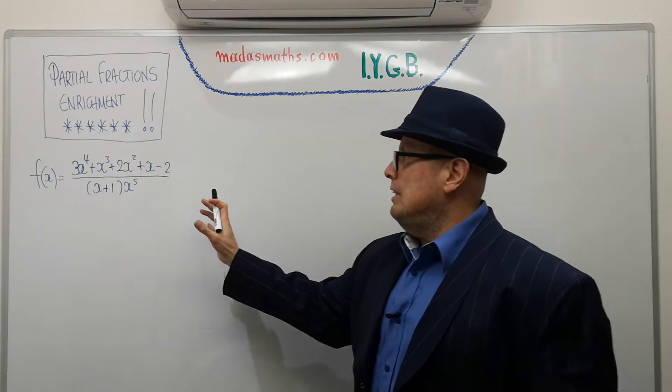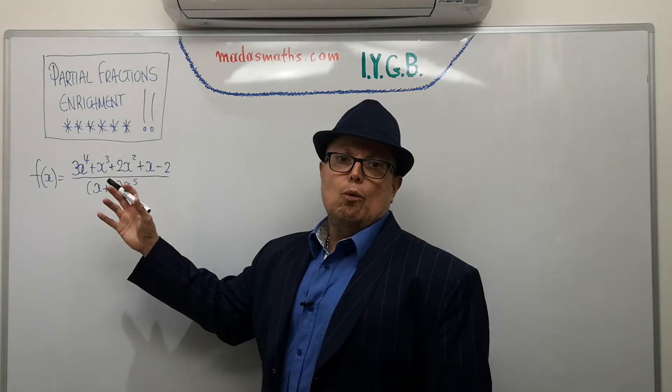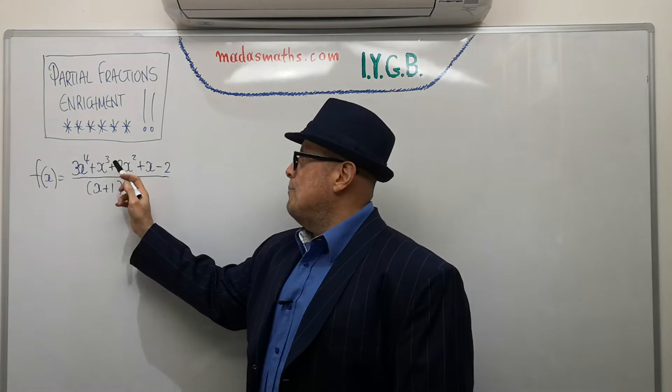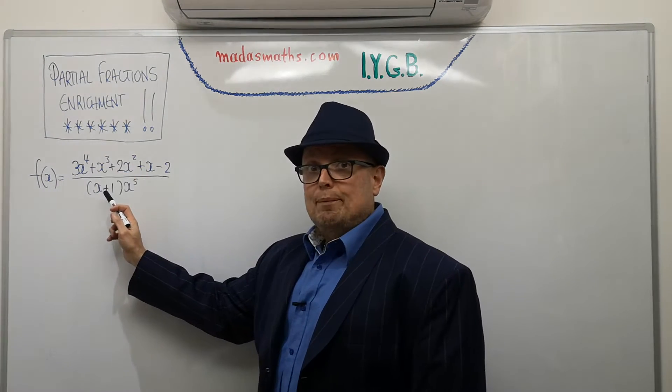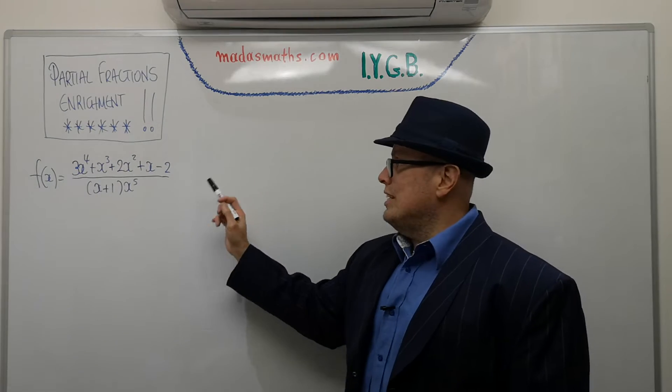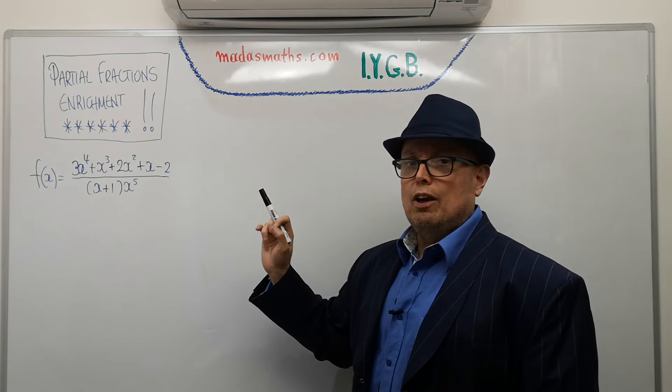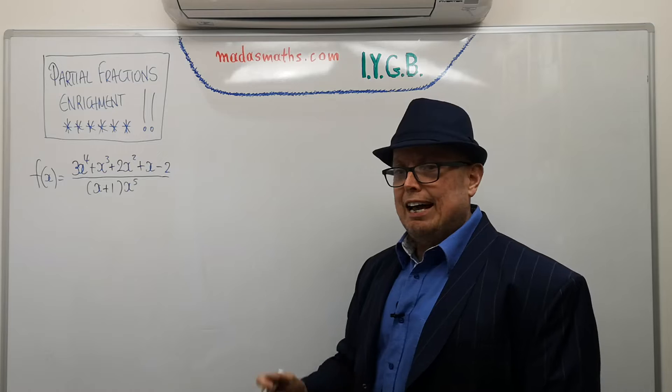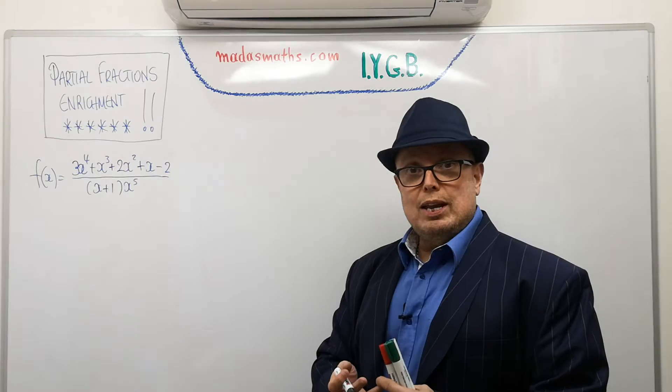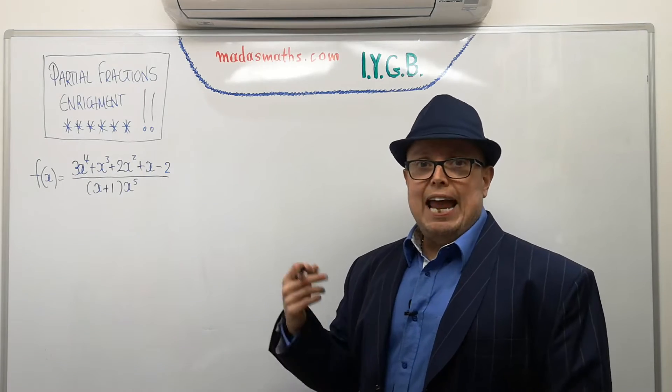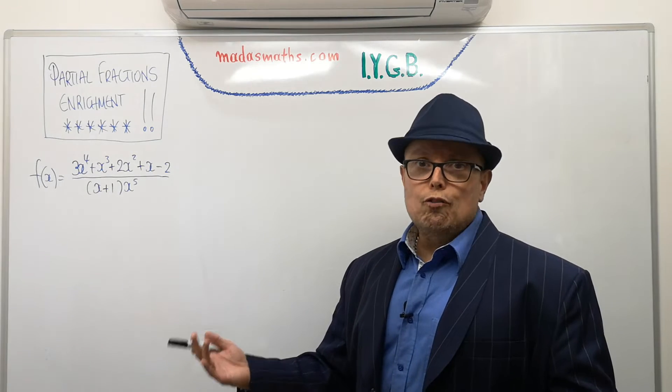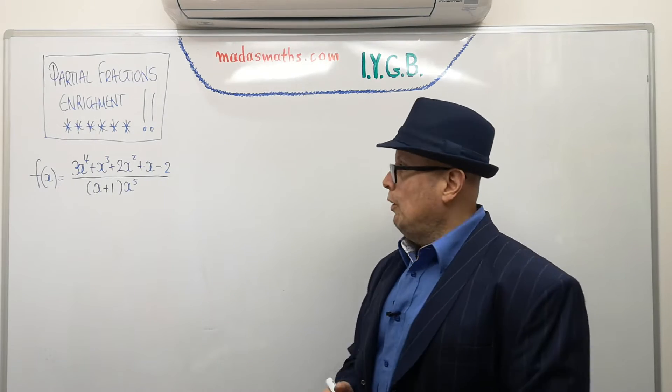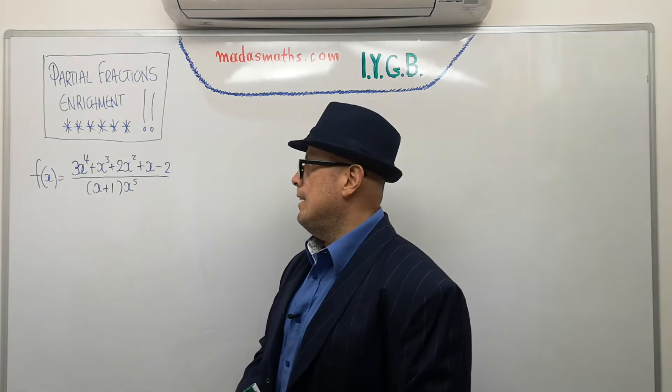So if you think about it, something like this will break quite clearly into a constant over x plus 1 and then you have a constant over x to the power of 5, but then you can have x to the power of 4, x to the power of 3, x squared and even x in all of this. Possibly all of them, possibly some of them. So the question is how do we do something like that?